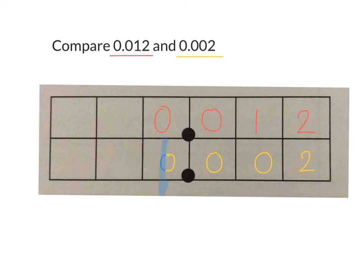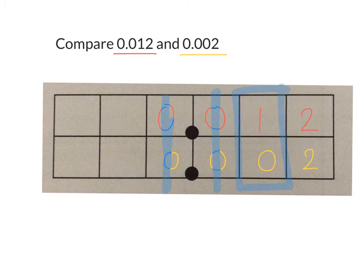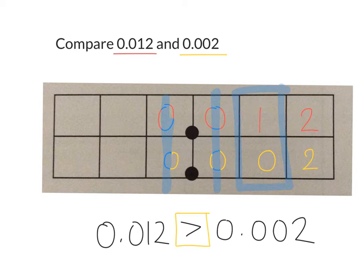What is the place value position here that has the largest value? Does the ones have any value? No. What about the tenths? No. What about the hundredths? Yes. And which hundredth place is bigger, one hundredth or zero hundredths? One hundredth. So we can write a math sentence now that says 0.012 or 12 thousandths is greater than two thousandths. Whenever we're comparing numbers, please be sure to use these comparison symbols. Repeat after me. Twelve thousandths is greater than two thousandths.